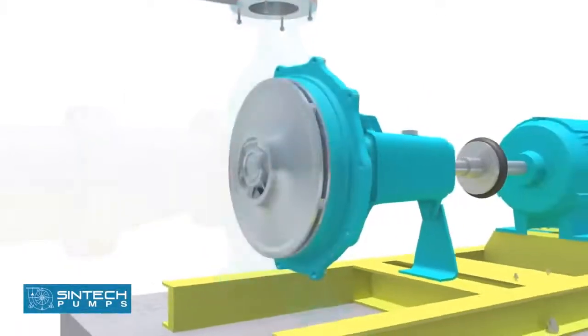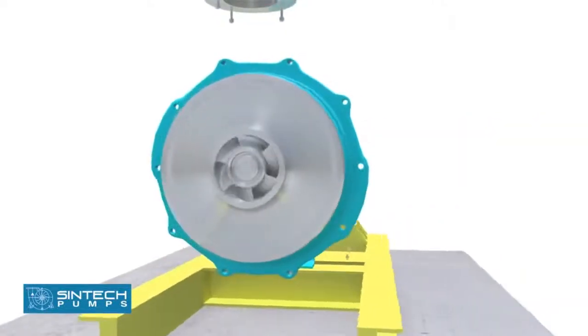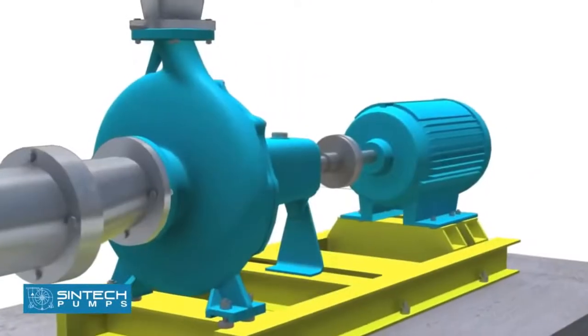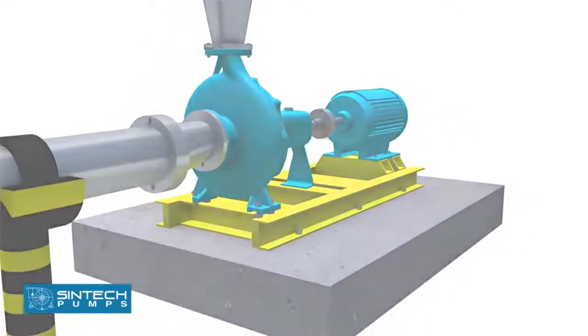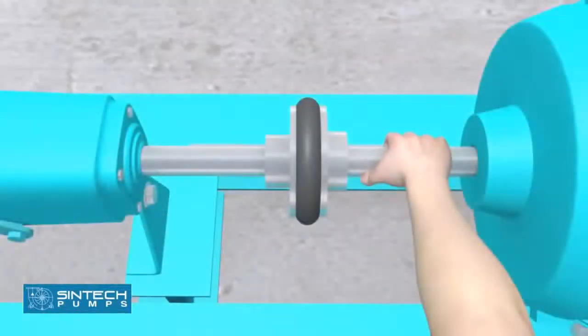The motor should be wired correctly to ensure the correct direction of rotation. This check has to be carried out before the pump is coupled. Once the pump and motor have been coupled, test the movement manually by rotating it by hand to see if it is rotating smoothly.